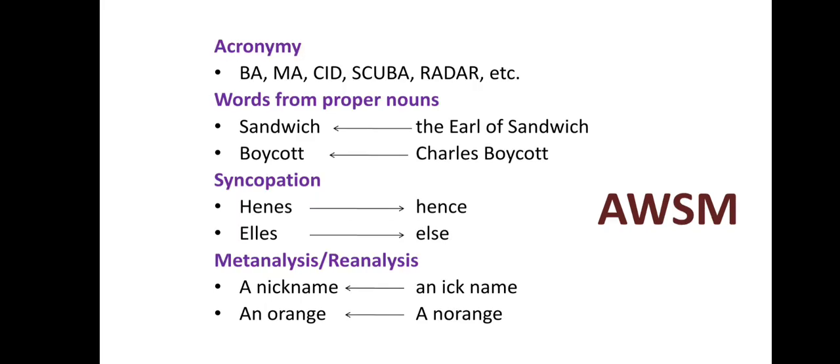The next process is Acronymy. Words under this category are formed from the initials of words, and in the course of time they have come to be recognized as regular words — they are short forms. For example, B.A. stands for Bachelor of Arts. Other examples include PAMA, SCUBA, RADAR, etc. These are not just short forms but words that can be used independently.